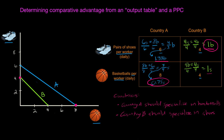You may be wondering how country B gets basketballs if it's not producing any domestically, and how country A gets shoes if it's not producing any domestically. The answer lies in trade. By trading with one another, both countries will be able to consume some combination of basketballs and shoes that is beyond each country's domestic production possibilities. These dashed lines represent what we could call the trading possibilities curves of both countries A and B. Points X and Y represent possible levels of consumption beyond what each country could achieve by producing both goods for themselves.